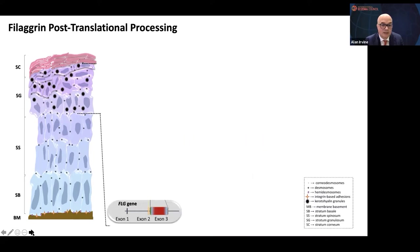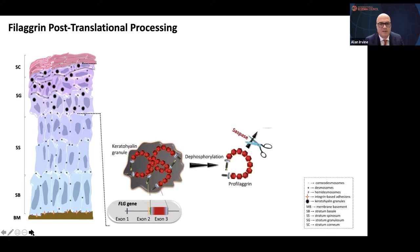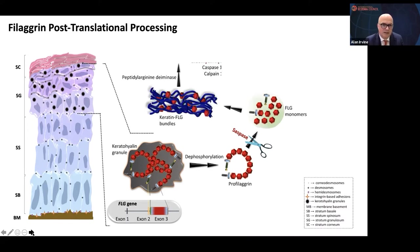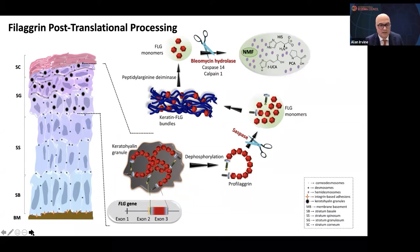Taking the gene expressed in the granular layer, filaggrin monomers form the key barrier with bundled keratin filaments. We then get that broken down again by bleomycin hydrolase into natural moisturising factor, or NMF. NMF gives the skin suppleness, flexibility, and natural moisturising that enhances the barrier. So if you have mutations in filaggrin and can't express it on one or two alleles, you get a big reduction in NMF because filaggrin is a major contributor.